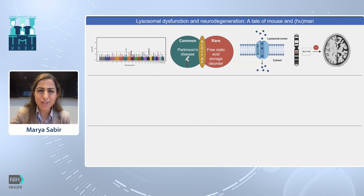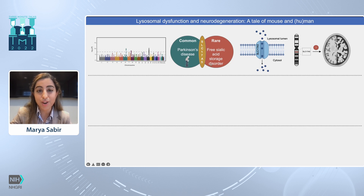However, approximately 20 years earlier, this was first discovered as the cause of a rare neurodegenerative disease called free sialic acid storage disorder, or FSASD for short.